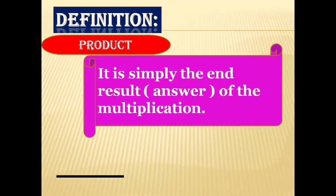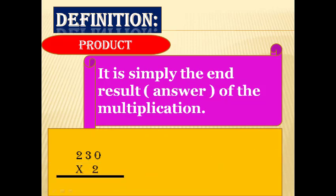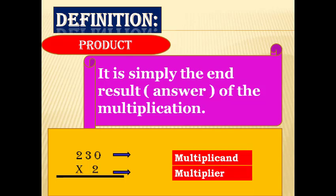Definition of product: It is simply the end result or answer of the multiplication. In this example, 230 is the multiplicand, 2 is the multiplier, and after multiplying we get 460, which is the product.